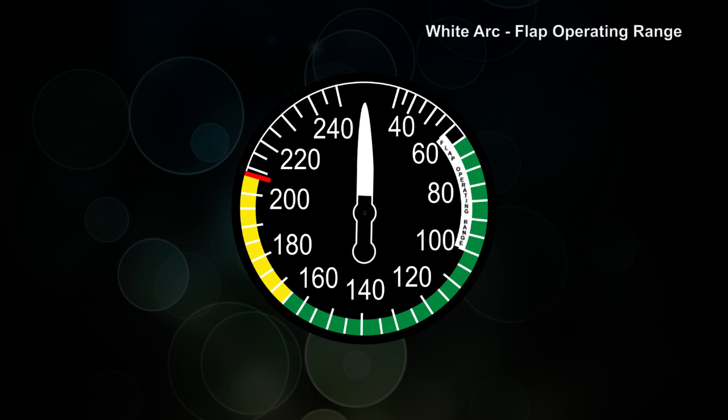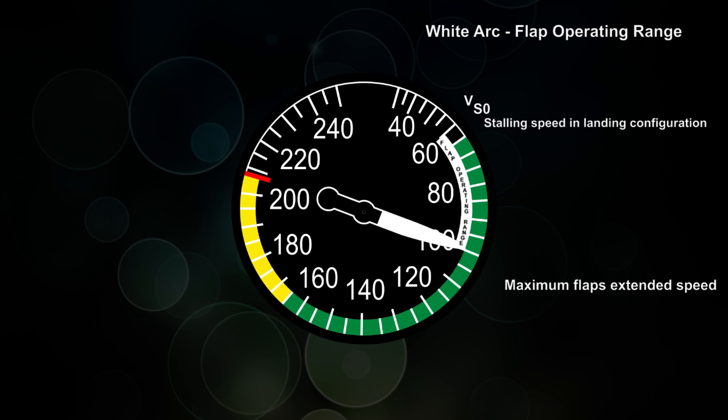The white arc is the flap operating range, and the beginning of the white arc, or the slowest speed, is the stalling speed in a landing configuration. So that would be with flaps down, gear down, and that's when you would stall the airplane in a landing configuration, and we call that speed VSO. At the end of the white arc, or the faster end, is the maximum flap operating speed, or VFE. And this is the absolute maximum speed you can fly with the flaps extended without causing damage.